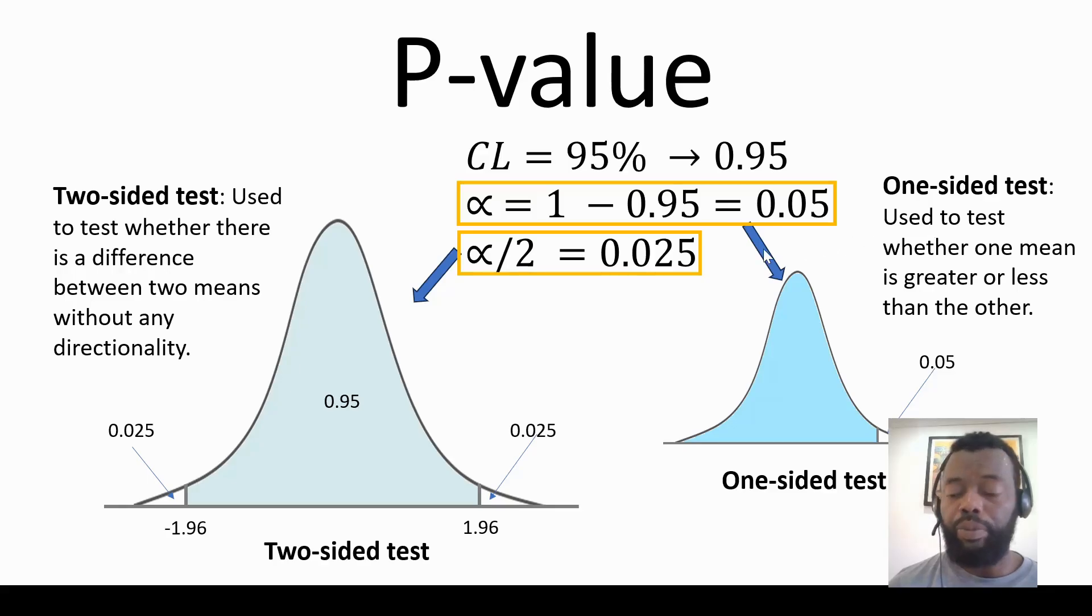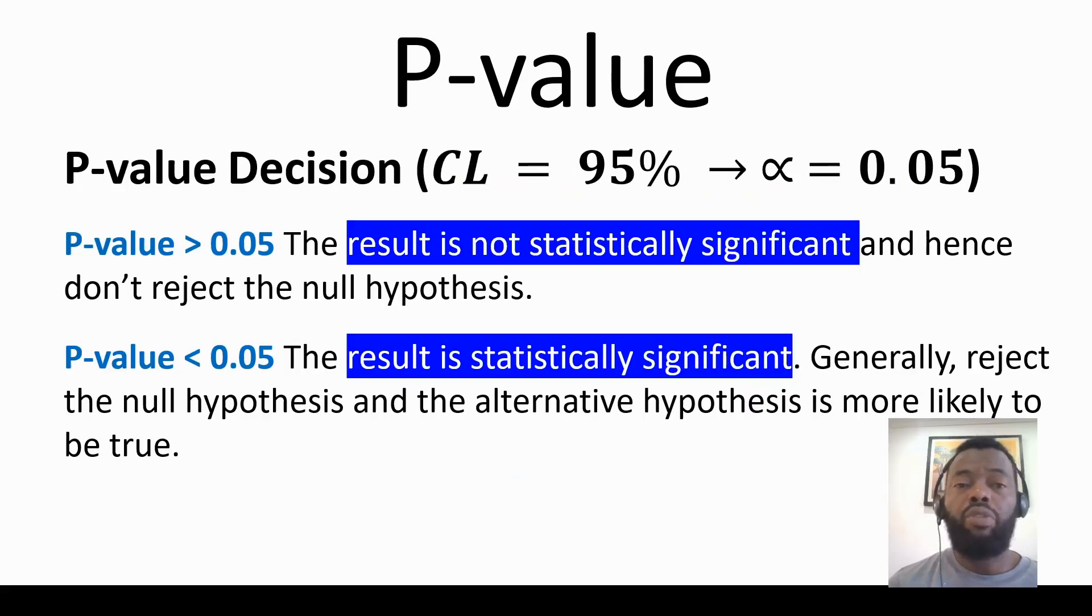We have a p-value decision for confidence level of 95% that corresponds to 0.05 for alpha. When p-value is greater than 0.05, the result is not statistically significant and we don't reject the null hypothesis.